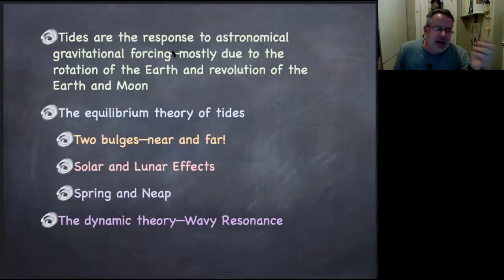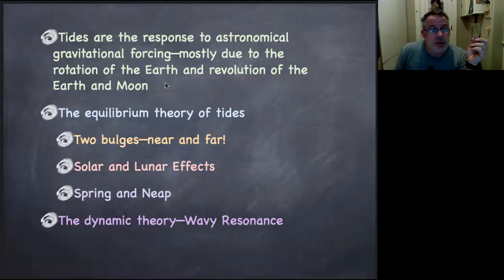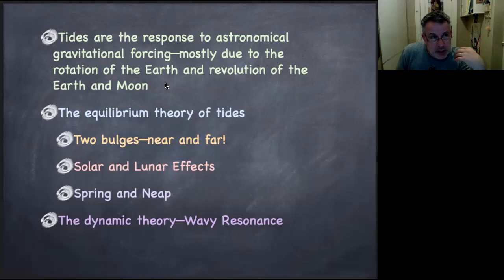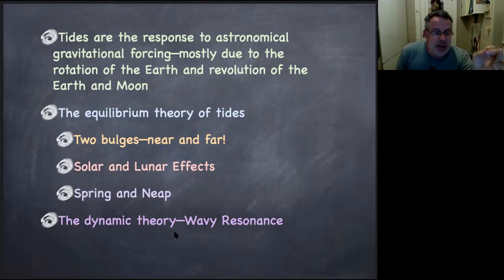Tides are the response to astronomical forcing, mostly due to the rotation and revolution of the Earth and Moon. There are two ways to think about tides. One is the equilibrium theory, which is not actually a wave theory at all — suppose we think about gravity being stronger in some parts of the Earth than others, and how the water rushes into those places with excess gravitational attraction to the Sun or Moon. But the dynamic theory of tides is needed if you want to predict why some places have much bigger tides than others, and that's really a wave resonance phenomenon.